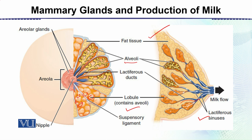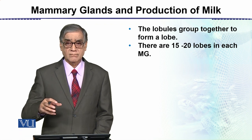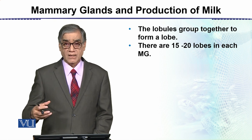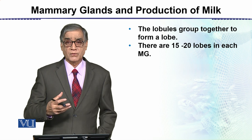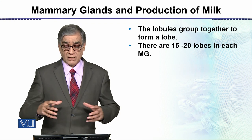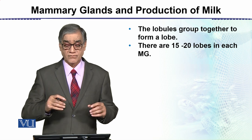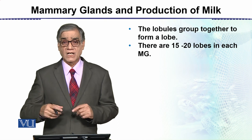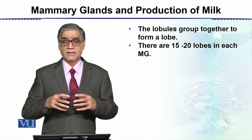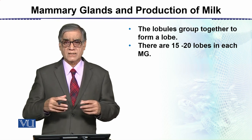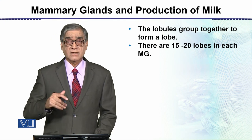Milk comes out of the nipple by the suckling of the child. There are many lobules grouped together — like a cluster of grapes — forming lobes. There are fifteen to twenty lobes within the whole mammary gland. So in summary: lobes are composed of lobules, lobules contain milk-forming lactiferous tissue, and milk exits through the lactiferous ducts.